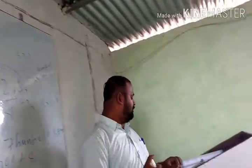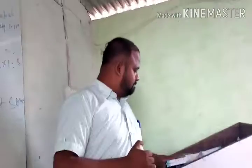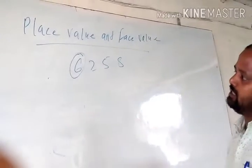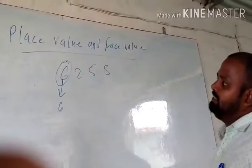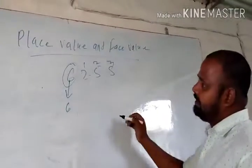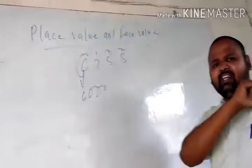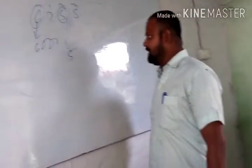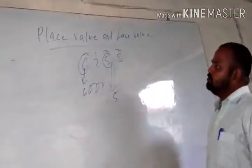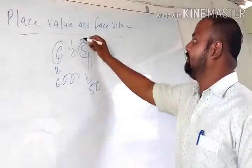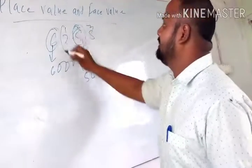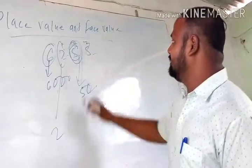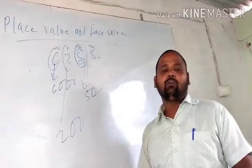अब हमारा next topic है place value और face value। Place value कैसे निकालते हैं — जैसे कि 6 का place value: इसके बाद 3 digits हैं, it means 6 के बाद 3 zeros put करेंगे। इस 5 का place value: 5 के बाद जितने digits हैं उतने zeros लगाओ — 50 होगा। इस तरह हम place value निकालते हैं।